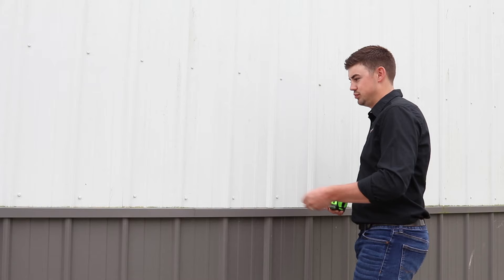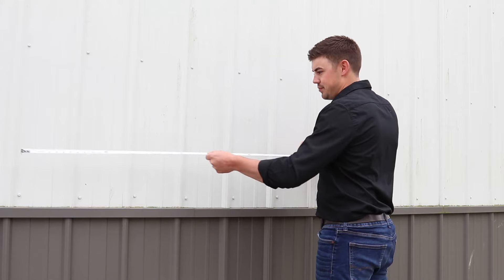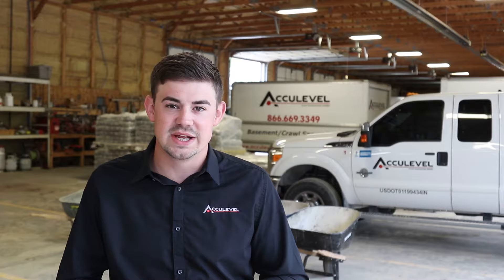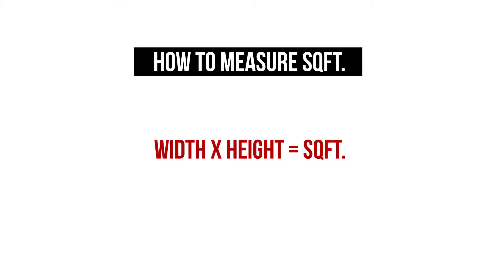What is square footage and how do you figure it out? We use this a lot to find the surface area of a crawl space, a basement, something like that. Basically, the calculation is simply taking the width of one wall times the length of another wall. You take those two lengths, multiply those two numbers, and that's how you find your square footage for your basement, your crawl space, or whatever you may be looking for.